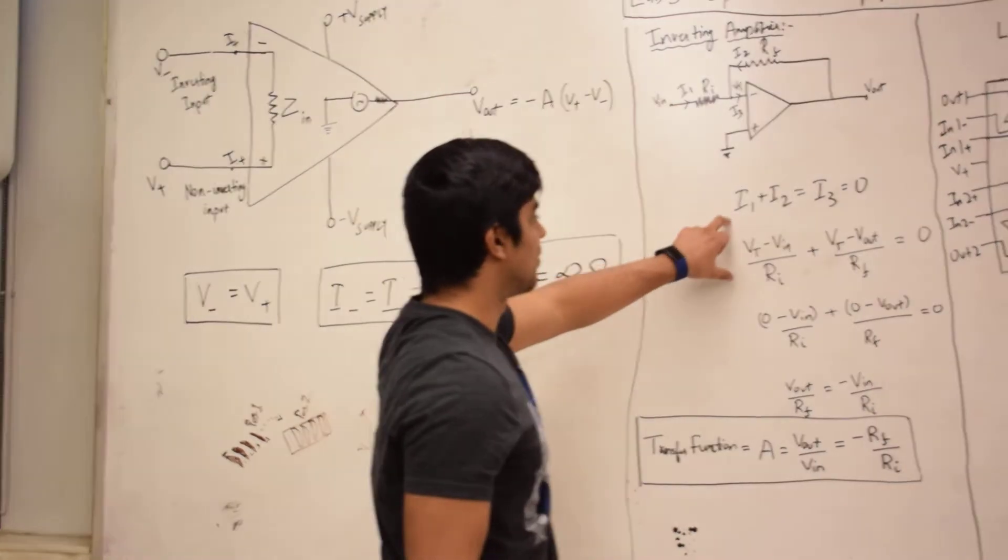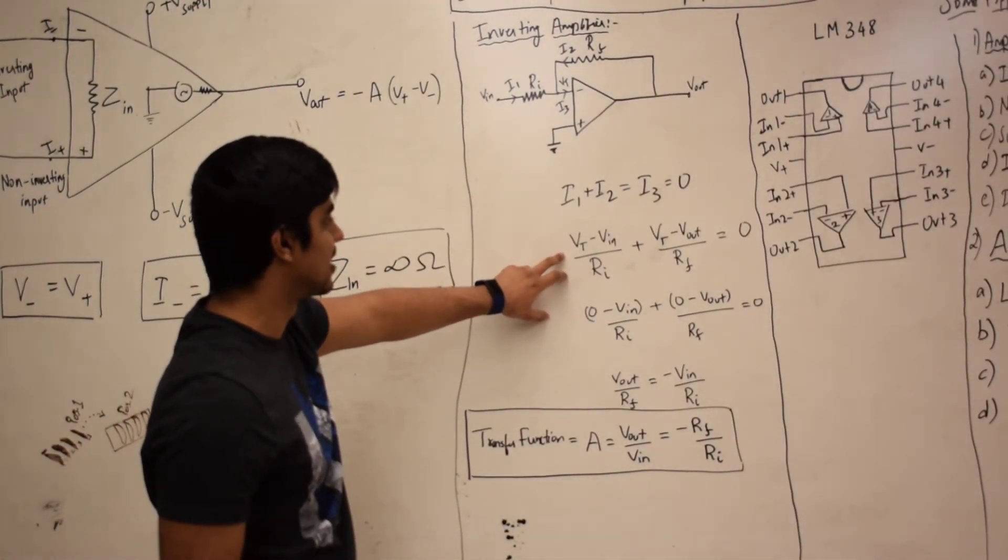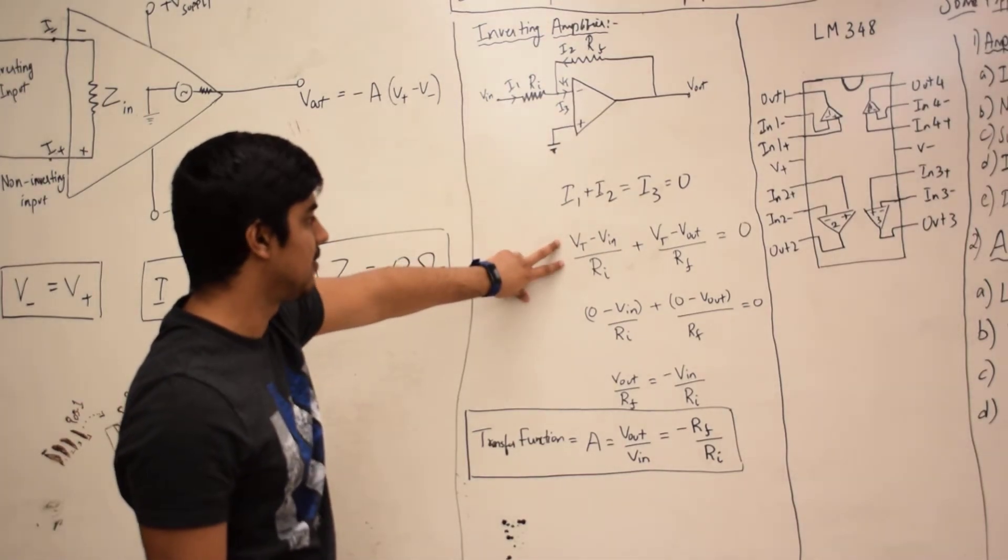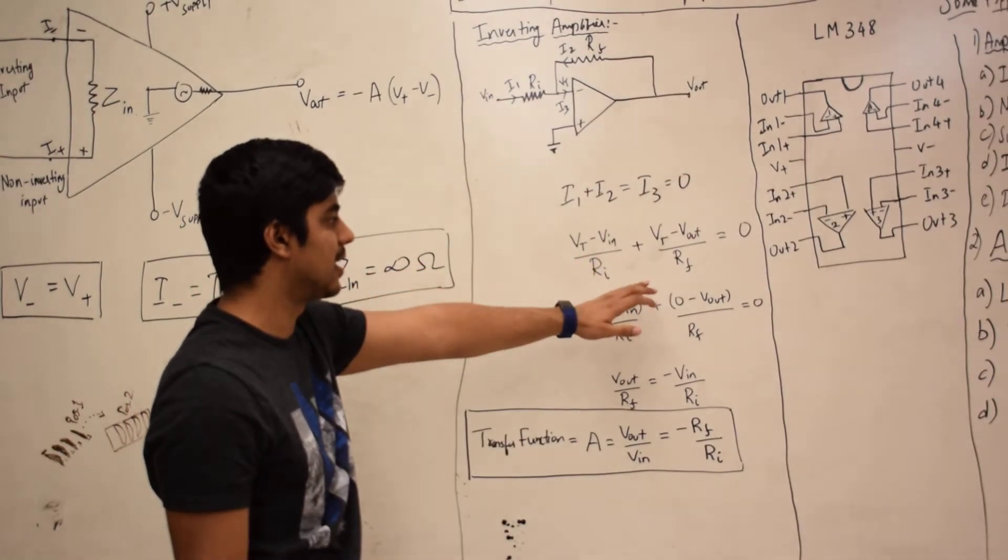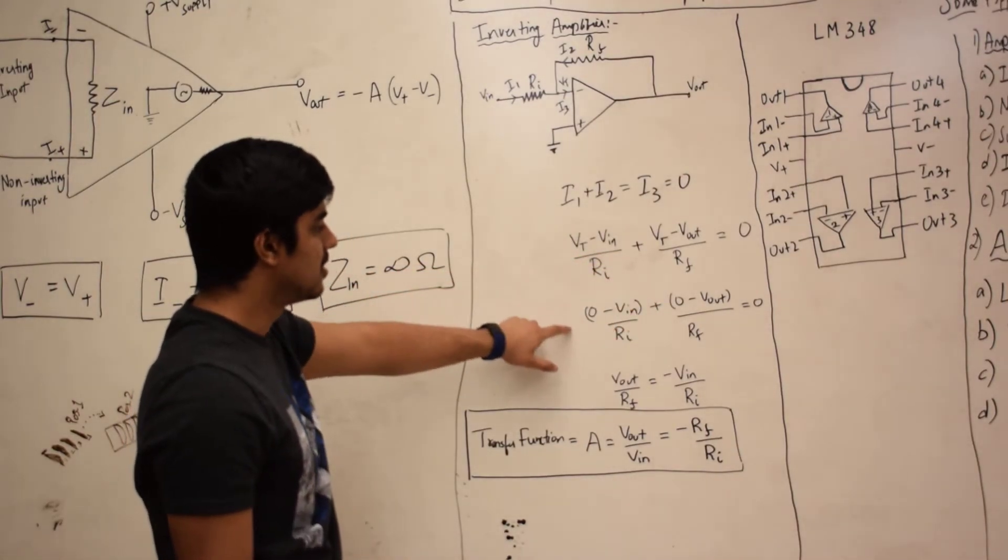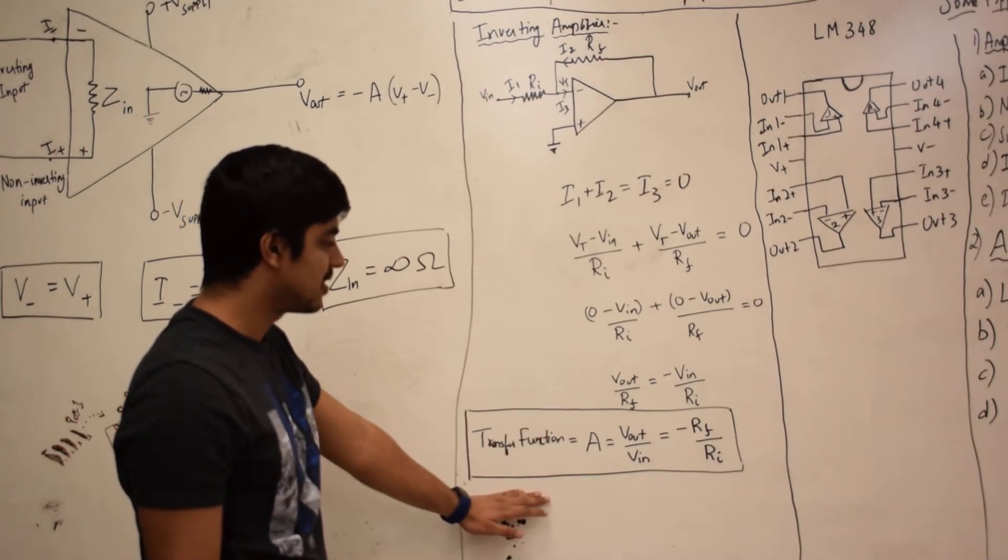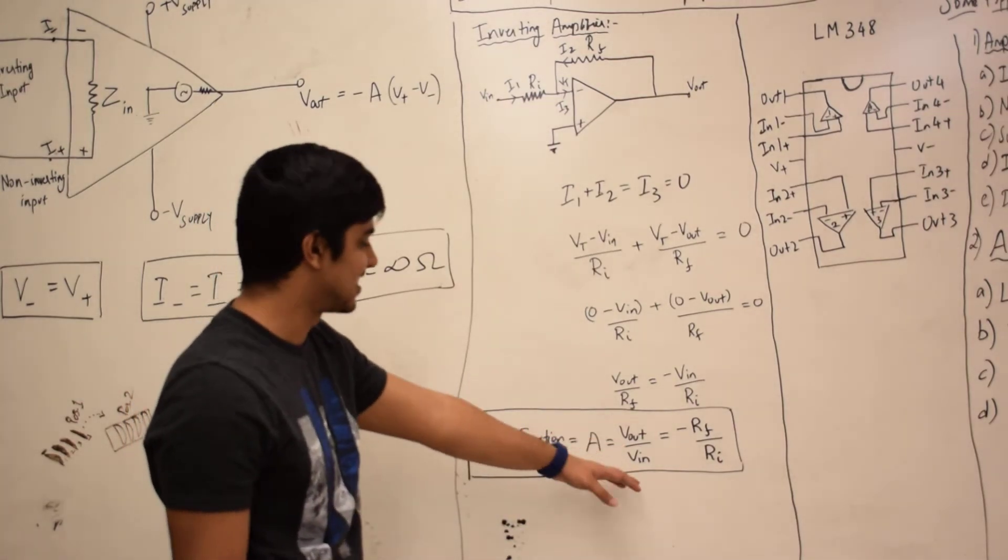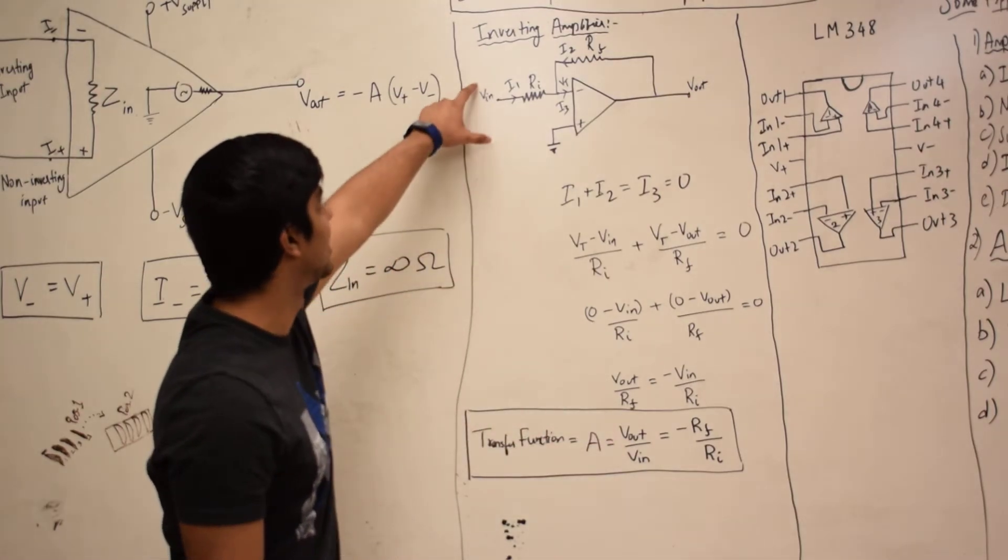From that, we can see that the potential, when we convert it using Ohm's law to (VT - VIN)/RI + (VT - Vout)/RF equals zero. You can get the transfer function by just following the steps. In the end, you get -RF/RI for your inverting amplifier.